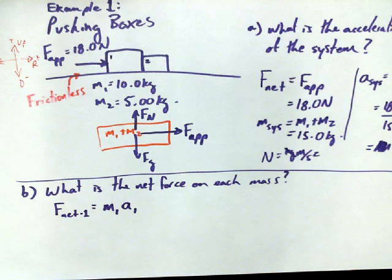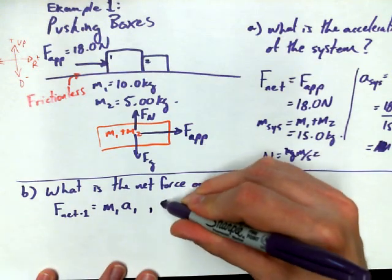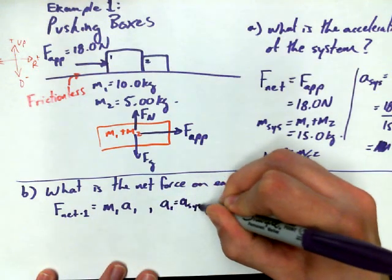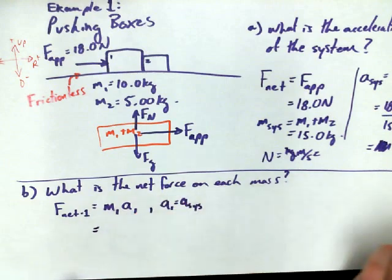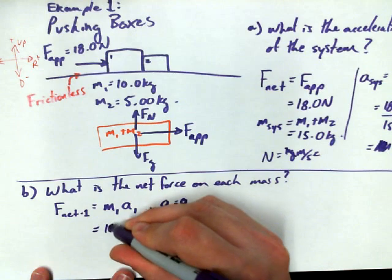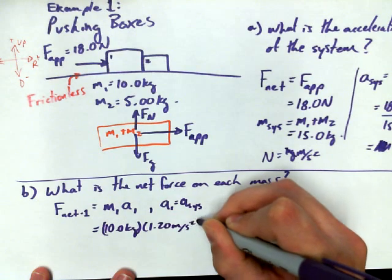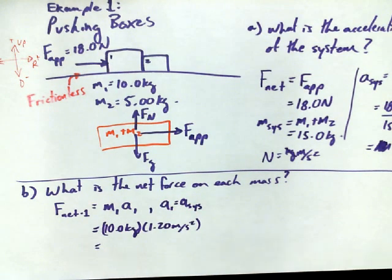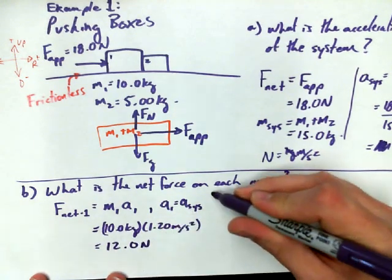Now we have to make a recognition here that the acceleration of mass 1 is going to be the same as the acceleration of the system because it's a part of the system, right? If you want to, you could make a note that a1 equals a_sys. At this point, we could sub in our values. Mass 1 is equal to 10 kilograms. Acceleration of the system is 1.20 meters per second squared. And this is an easy one. 10 times 1.2. Yeah, 12.0. So 12.0 newtons is the net force on mass 1.